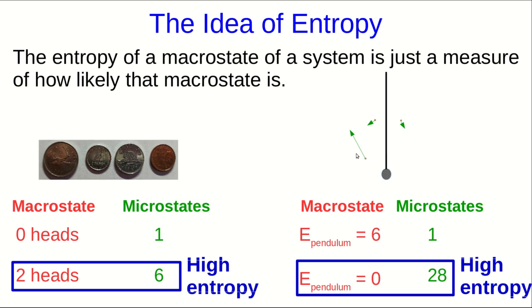The point, however, is that in the sorts of physical systems we usually think about where we aren't dealing with about four objects, but more like a mole of atoms, the high entropy states have incredibly large numbers of microstates and are thus far, far, far more likely than the lower entropy states.